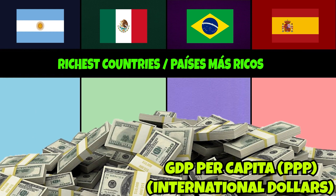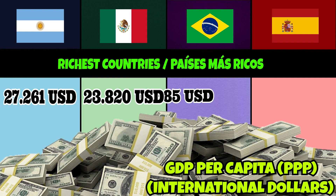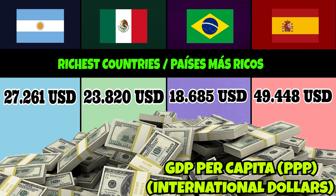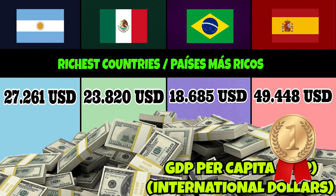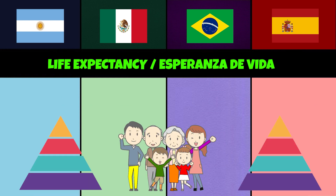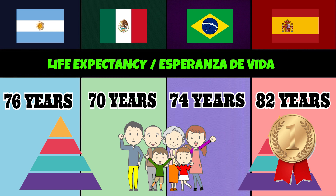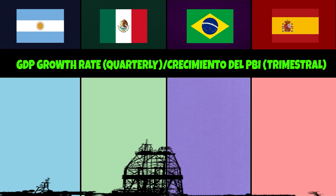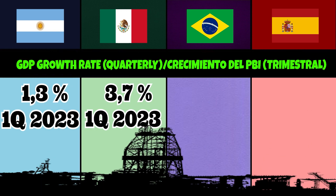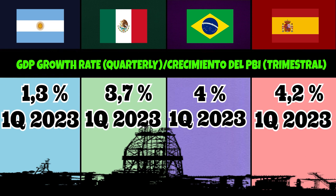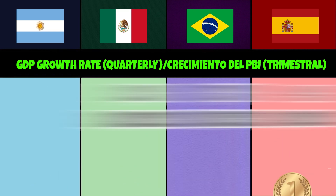GDP purchasing power parity per capita: 27,261 dollars, 23,820 dollars, 18,685 dollars, 49,448 dollars. Life expectancy: 76 years, 70 years, 74 years, 82 years. GDP growth rate: 1.3%, 3.7%, 4%, 4.2%.